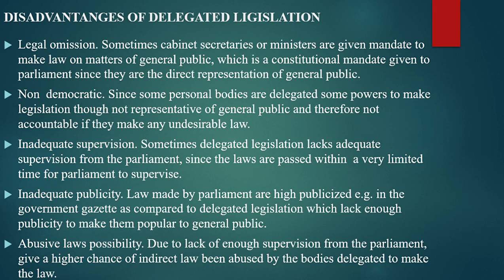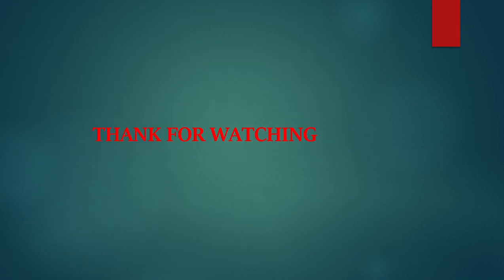There is also a possibility of abusive law. Due to lack of enough supervision from Parliament, there is a higher chance of indirect law being abused by the body delegated to make the rules. Since these bodies do not receive a lot of supervision from Parliament — which is the direct representation of the people — they can be biased in nature and make laws which do not act in favor of citizens. So there is a chance of emergence of laws which are abusive to citizens. That marks the end of our topic. Thank you for watching; kindly remember to subscribe and comment about the video.